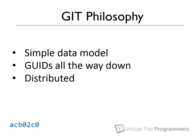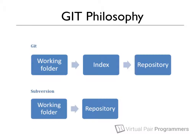One thing that can confuse users coming from another change management tool to Git is the index or staging area. This is basically an extra layer sitting between your files on disk and the repository itself. This can seem like an unnecessary step at first, but in later chapters we'll see how having this staging area makes it possible to keep a clean check-in history even when you're trying to manage multiple changes at once, which can often happen in real-world programming.